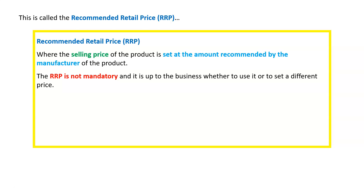It's up to the business whether to use the RRP or to set a different price. Some common examples include footwear and clothing — if you look at the tag, you'll often see a little "RRP" with the price. Books are another example; if you look at the back cover, you'll see it says "recommended price in Australia."